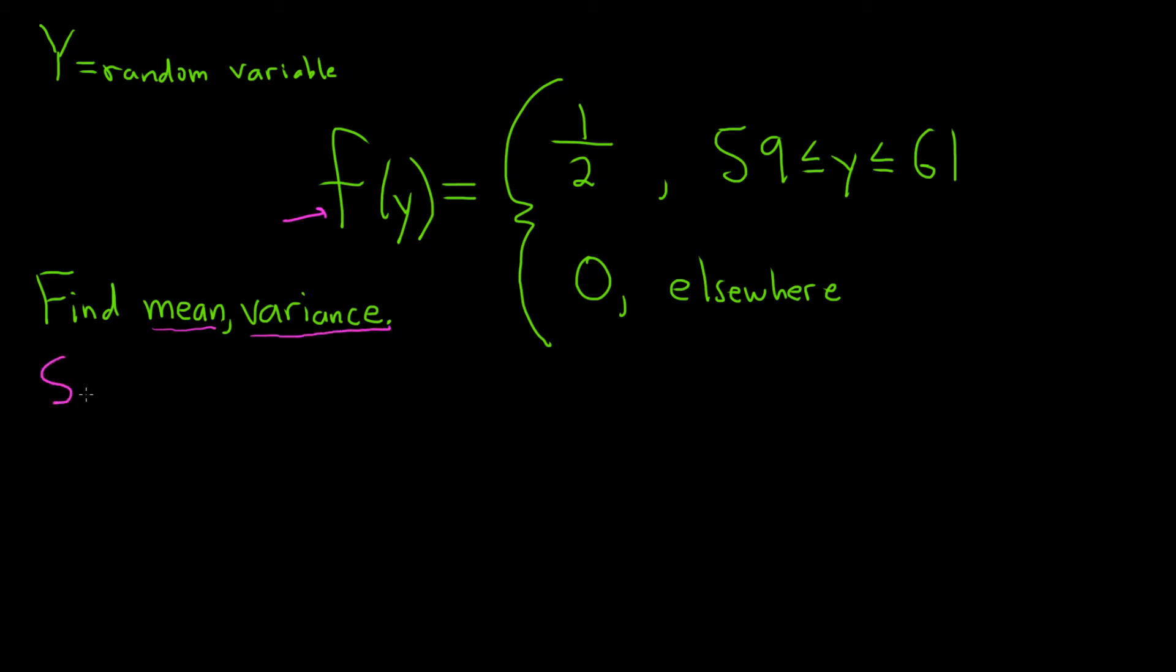Let's go ahead and carefully work through this. The first step will be to find the mean, which is simply mu. That's equal to what we call the expected value, capital E, of our random variable capital Y. By definition, this is equal to the improper integral from negative infinity to infinity of little y times f of y dy.